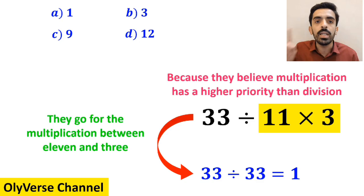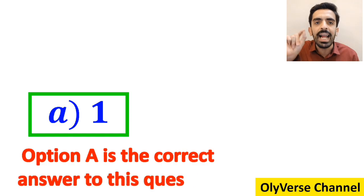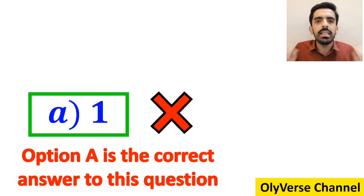which finally gives them the answer 1. Then, without any hesitation, they conclude that the correct answer to this question is option A. However, this answer is absolutely incorrect.